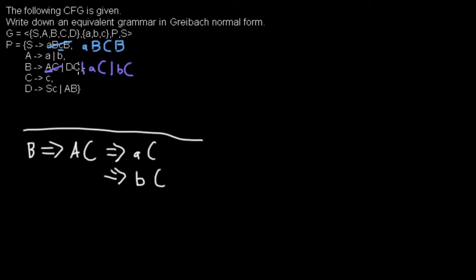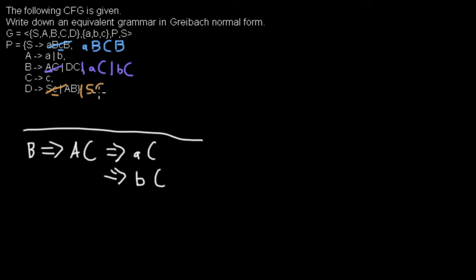Let's look at the other rule. We have a non-terminal D, but D has two rules where non-terminals are the first symbols on the right-hand side, so replacing D brings us nothing. Let's look at D expands to SC. There are two problems: one is the terminal C in the second position. Similar to what I did for S, I will replace that C with the non-terminal C and add a new rule D expands to SC — now the terminal C that was not in the first position is removed.